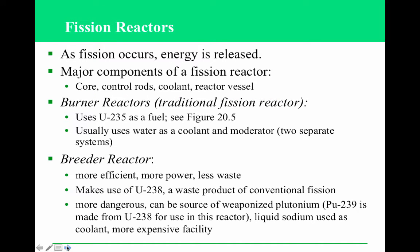The facilities are way more expensive, and they could act as a source of plutonium for nuclear weapons if somebody were able to get in and steal some. Burner reactors are traditional — the ones we see used most often — and they use uranium-235 as an energy source. Go ahead and take a look at figure 20.5 in your textbook.